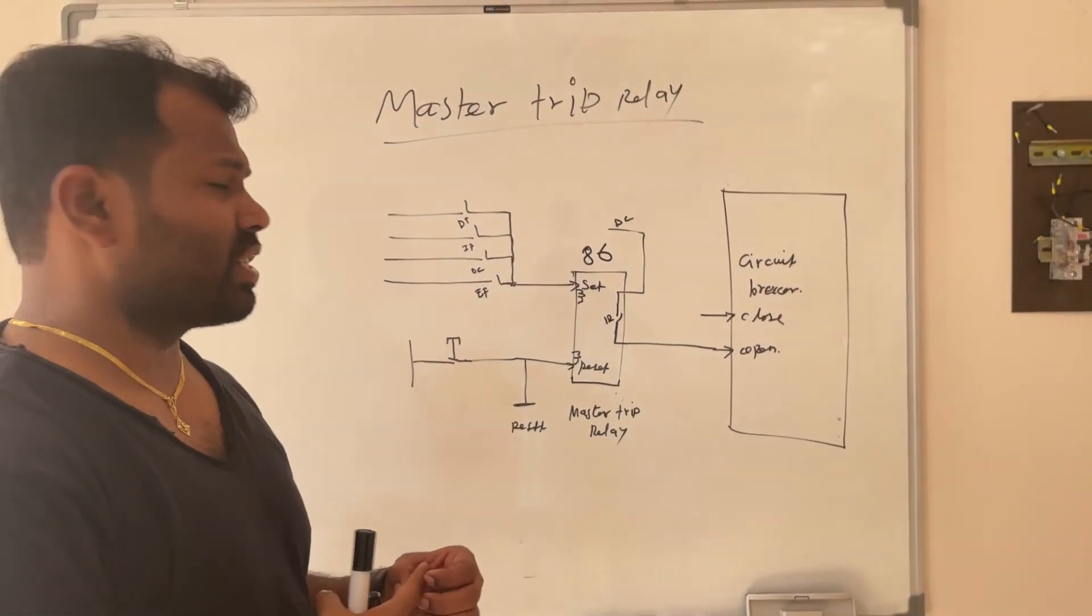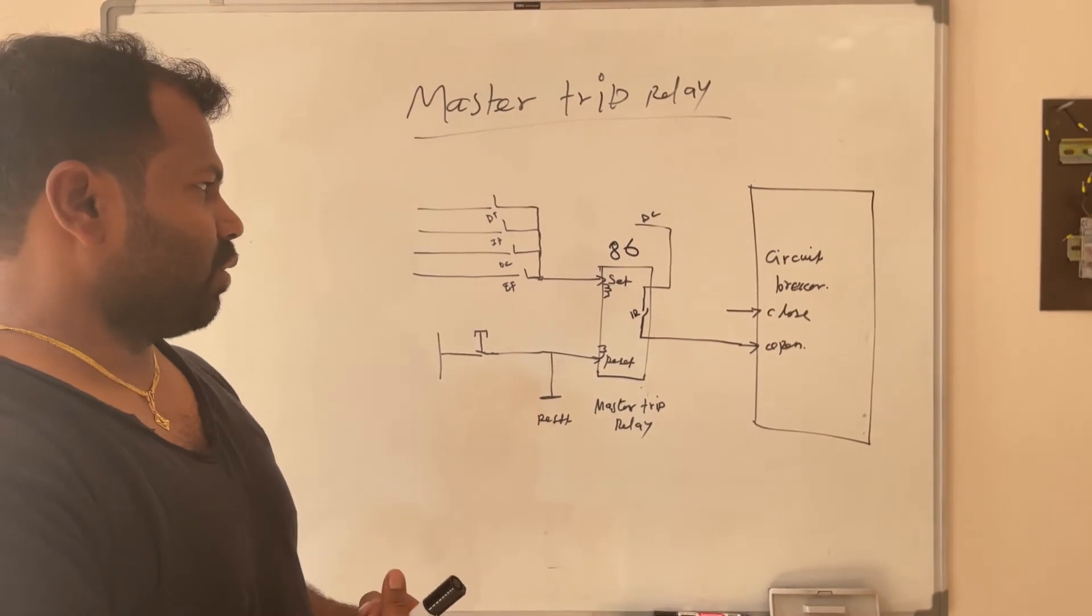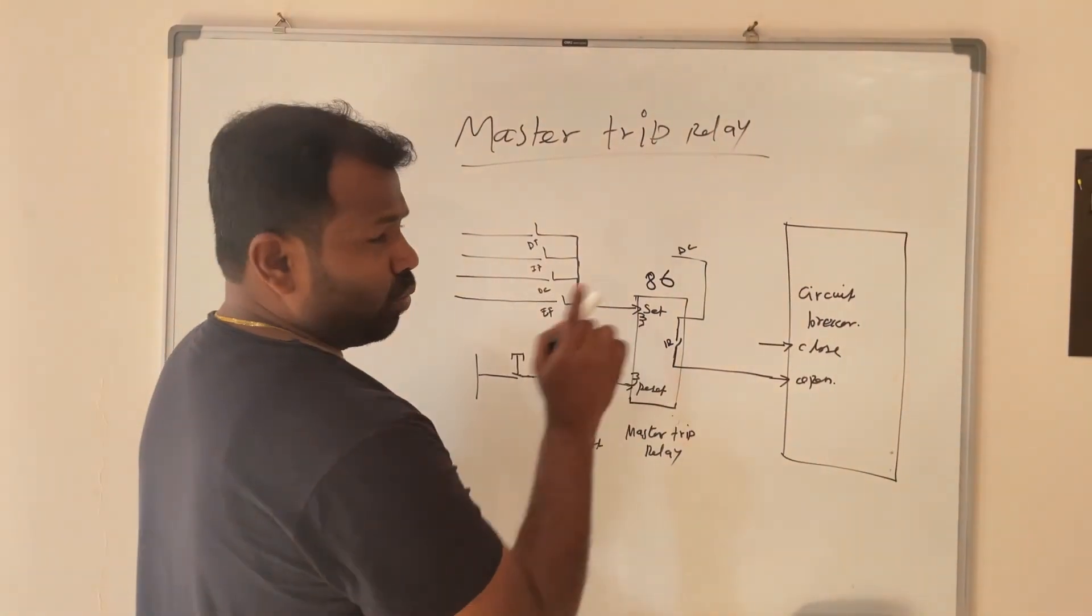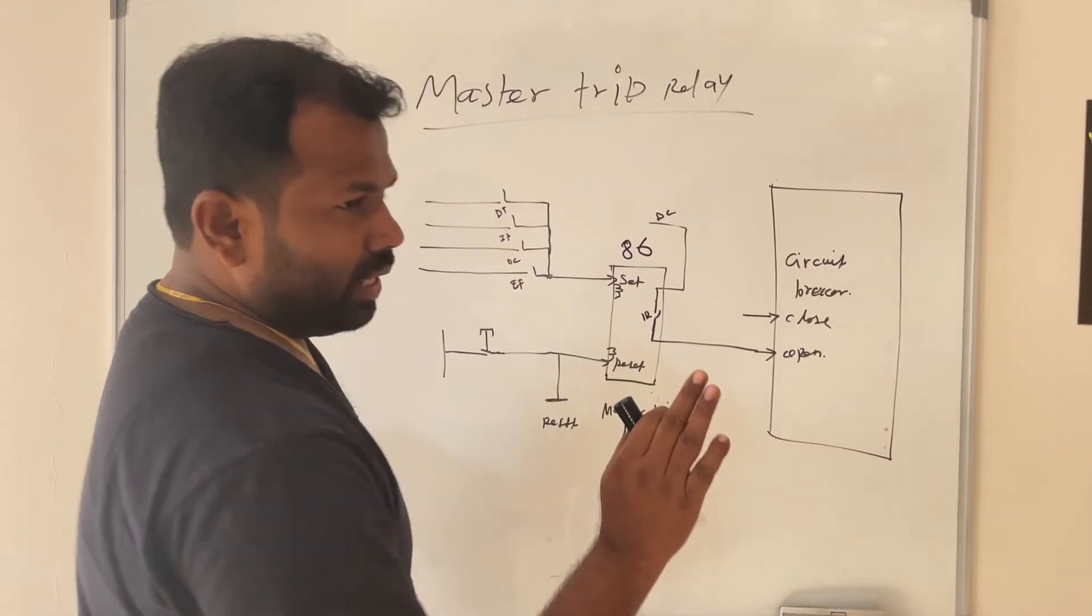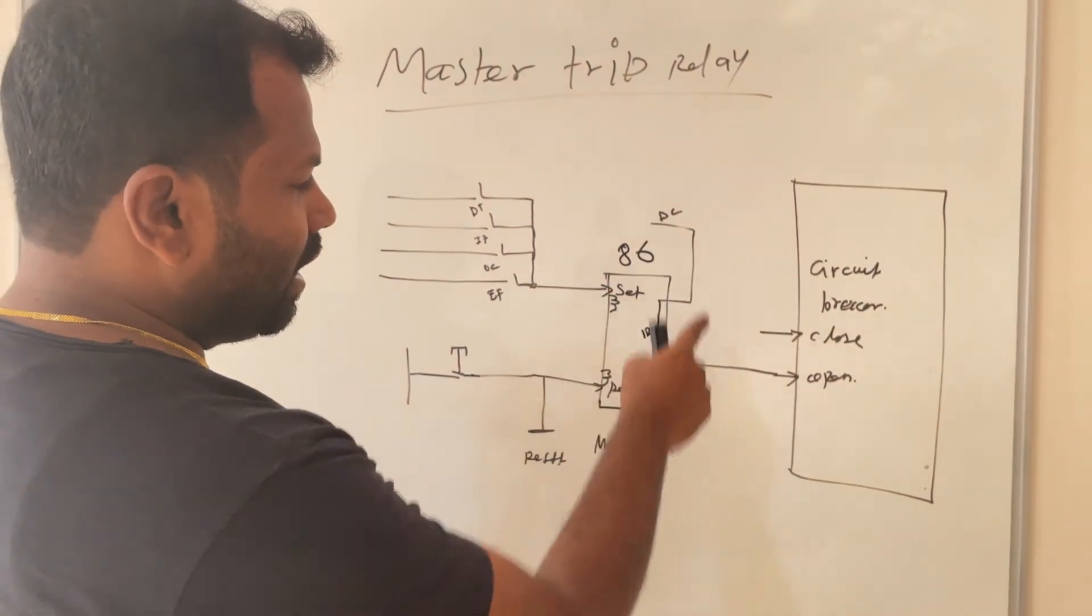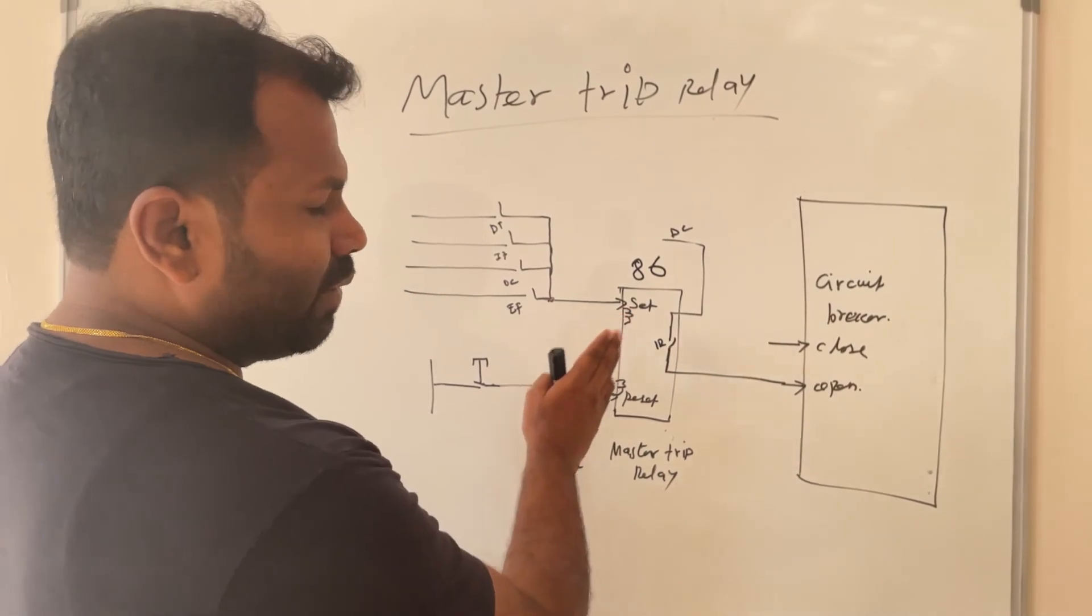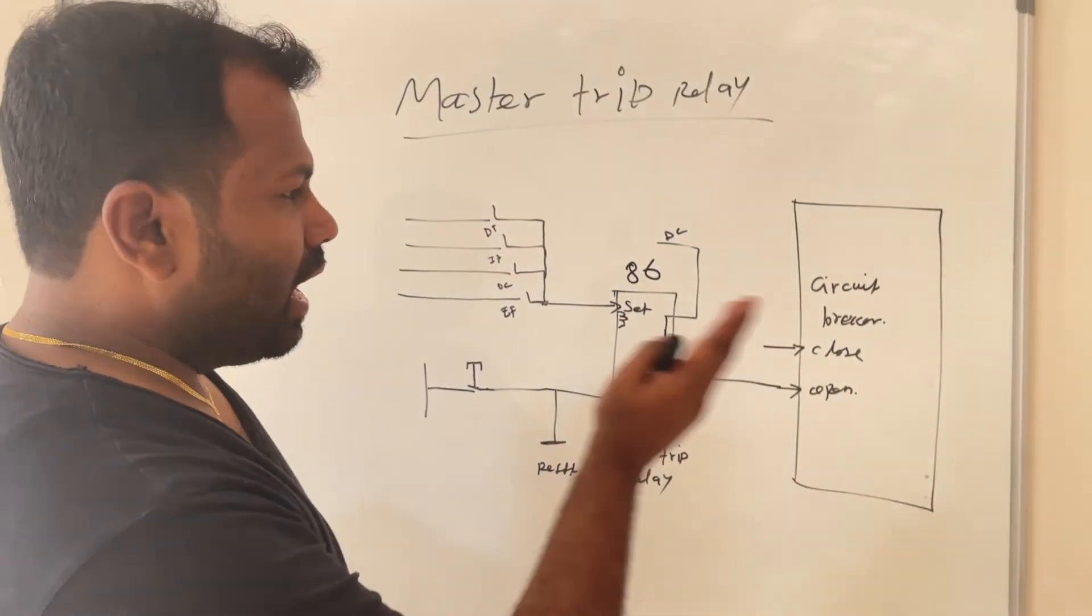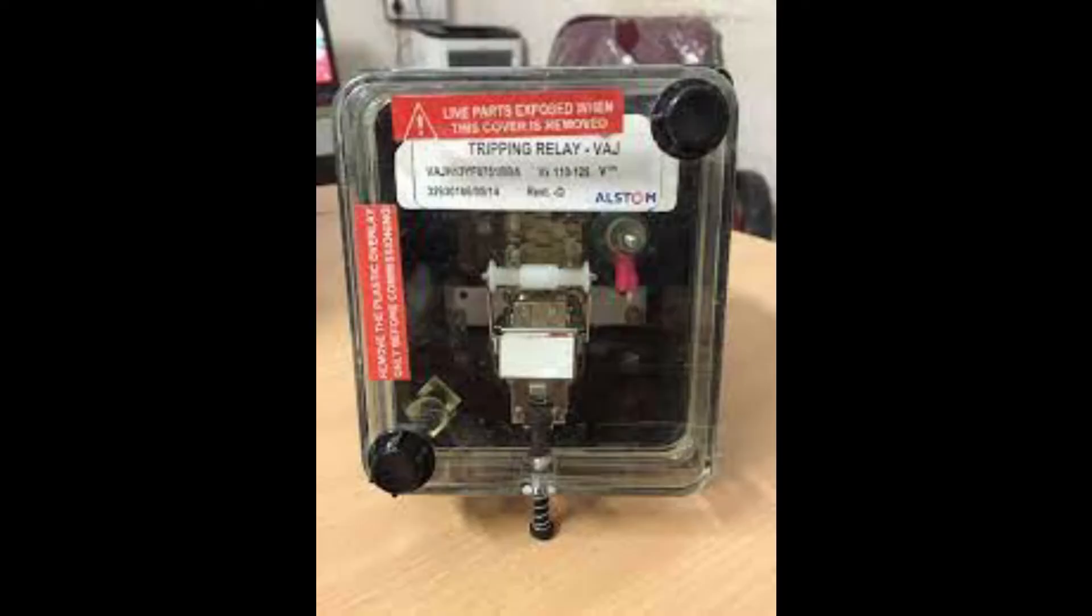In industrial receiving stations and also power generation stations. One more important thing is this master trip relay is not sensing any trip directly. This will not sense or monitor any protection. This will receive external signal and it will react based on the signal only. This master trip relay has another name called lockout relay.